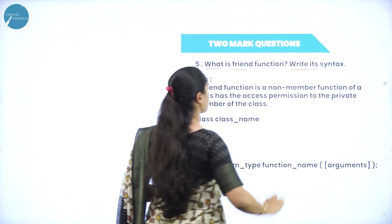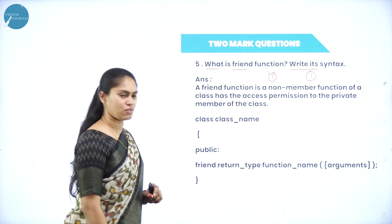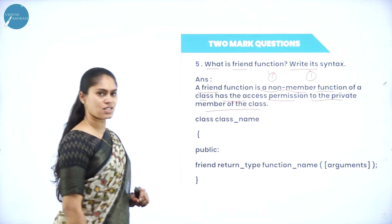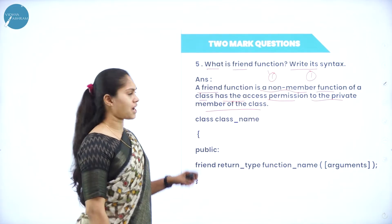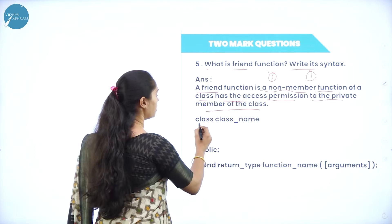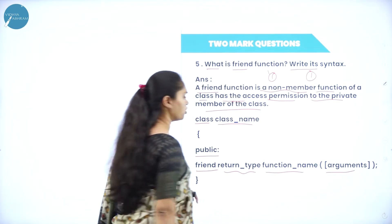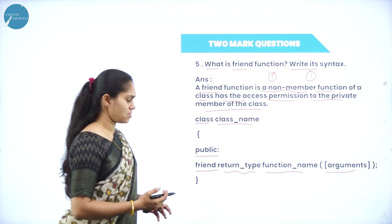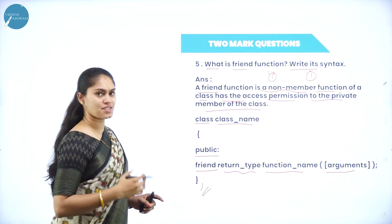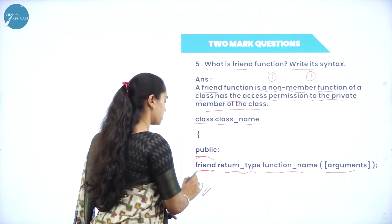Next: what is a friend function? Write its syntax. The definition is worth one mark, the syntax worth another. A friend function is a non-member function of a class that has access permission to all the private members of the class. For syntax: use the class keyword and name of the class; under public scope, use the keyword friend, then write the return type, function name, and any arguments in parentheses. Don't forget to close the class with a semicolon. It is preceded by the keyword friend, making it a non-member function.